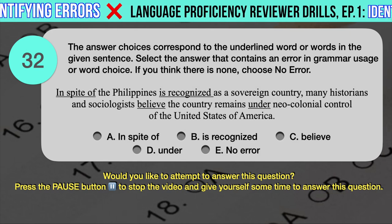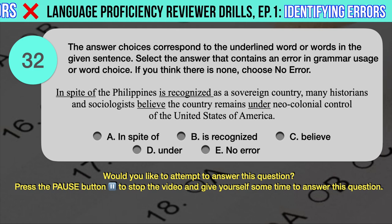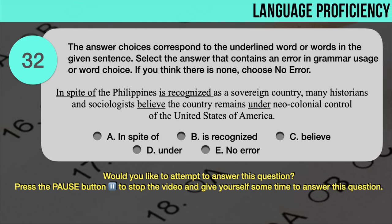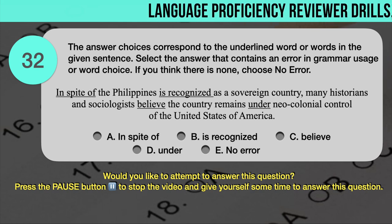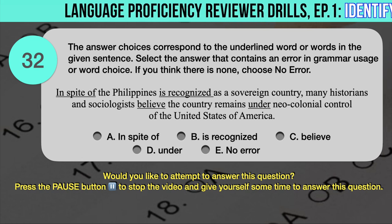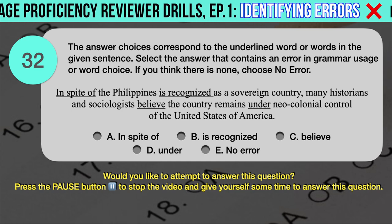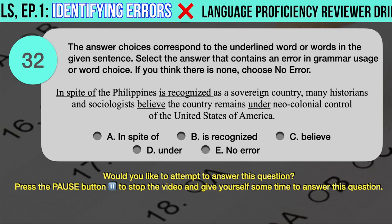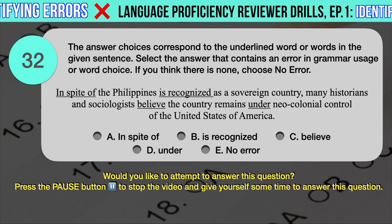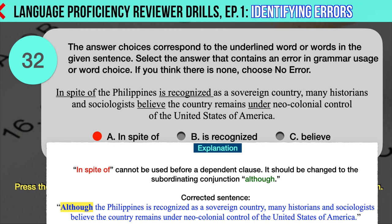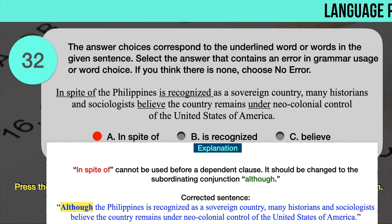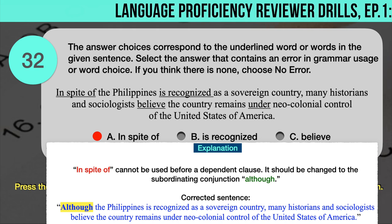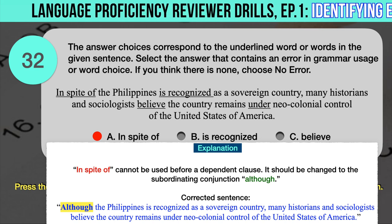Drill question number 32. 'In spite of the Philippines is recognized as a sovereign country, many historians and sociologists believe the country remains under neo-colonial control of the United States of America.' The underlined words are: A. In spite of, B. Is recognized, C. Believe, D. Under. The correct answer is A. 'In spite of' cannot be used before a dependent clause; it should be changed to the subordinating conjunction 'although.' Correct sentence: Although the Philippines is recognized as a sovereign country, many historians and sociologists believe the country remains under neo-colonial control of the United States of America.